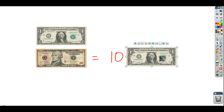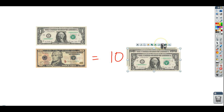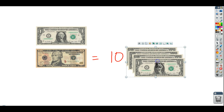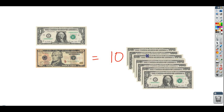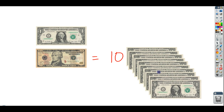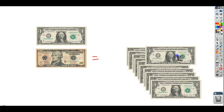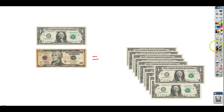I could actually make 10 $1 bills if I wanted to. Now I have four... eight... let's just get two more. Now I have 10 of those — a nice stack of them. And then I have my one here. Together, I would have 11 of these, so all together I would have 11 $1 bills.